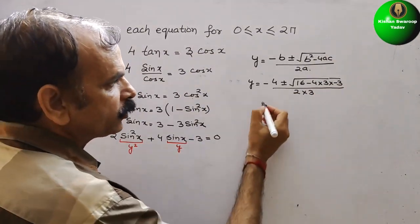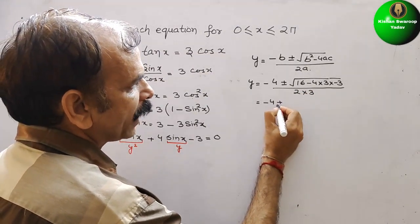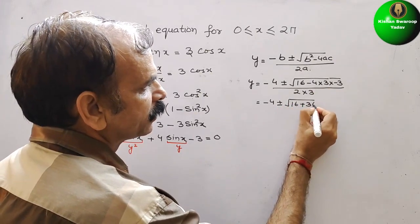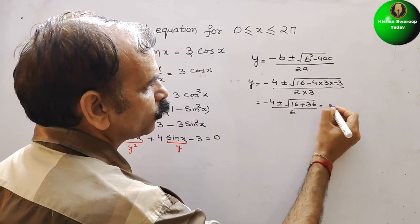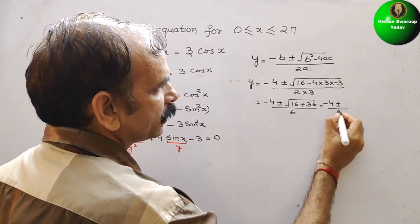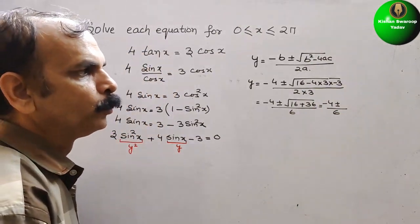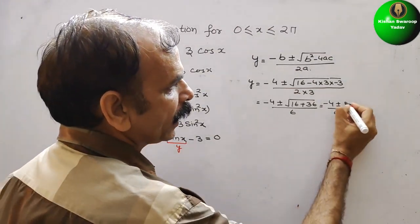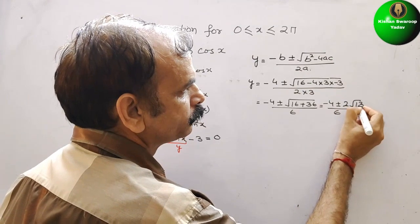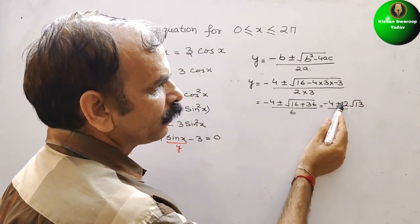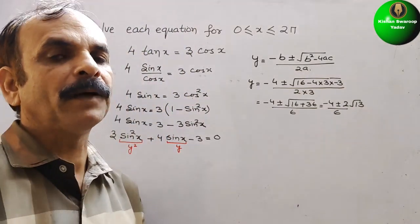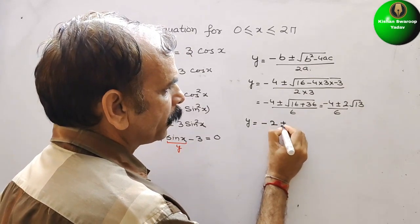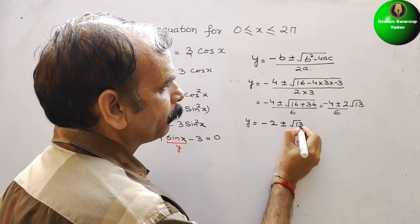If you solve this, you will get (−4 ± √(16 + 36)) / 6. That equals (−4 ± √52) / 6. Now, 52 is nothing but 4 × 13, therefore we will get 2√13. Reducing all three numbers by 2, we get y = (−2 ± √13) / 3.